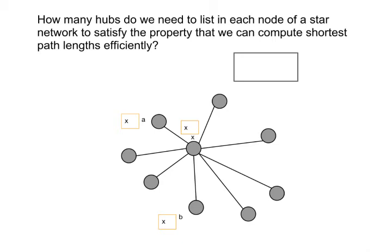So for this kind of star network in particular, the data structure that you need to set up is actually really quite simple. We need to be able to compute the distance between any pair of nodes, let's say A, which is labeled here in the graph, and B, which is labeled here in the graph.